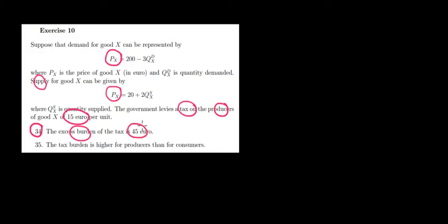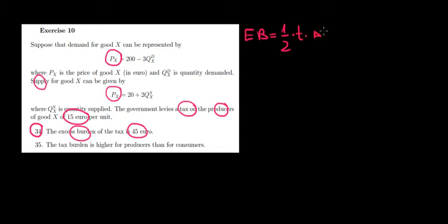What's the idea here? Because we have a tax, we'll have an inefficiency in the market and we want to know how much the efficiency in the market will be distorted — how much it will be hurt. That is our excess burden, which is one-half times the tax times the change in the quantity of equilibrium in the market.